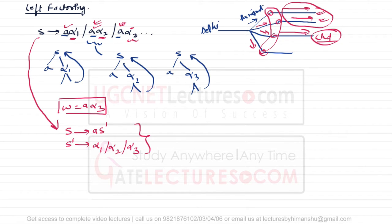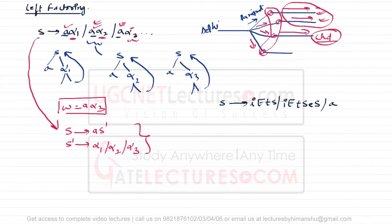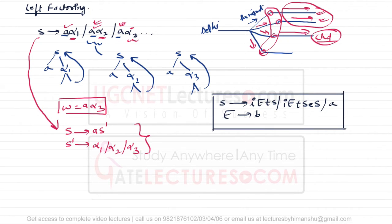Consider this example grammar: S → iEtS | iEtSeS | a, and E → b. This grammar represents the if-else statement — 'if expression then statement', 'if expression then statement else statement', and a simple expression. This is a grammar representing the if-else condition.